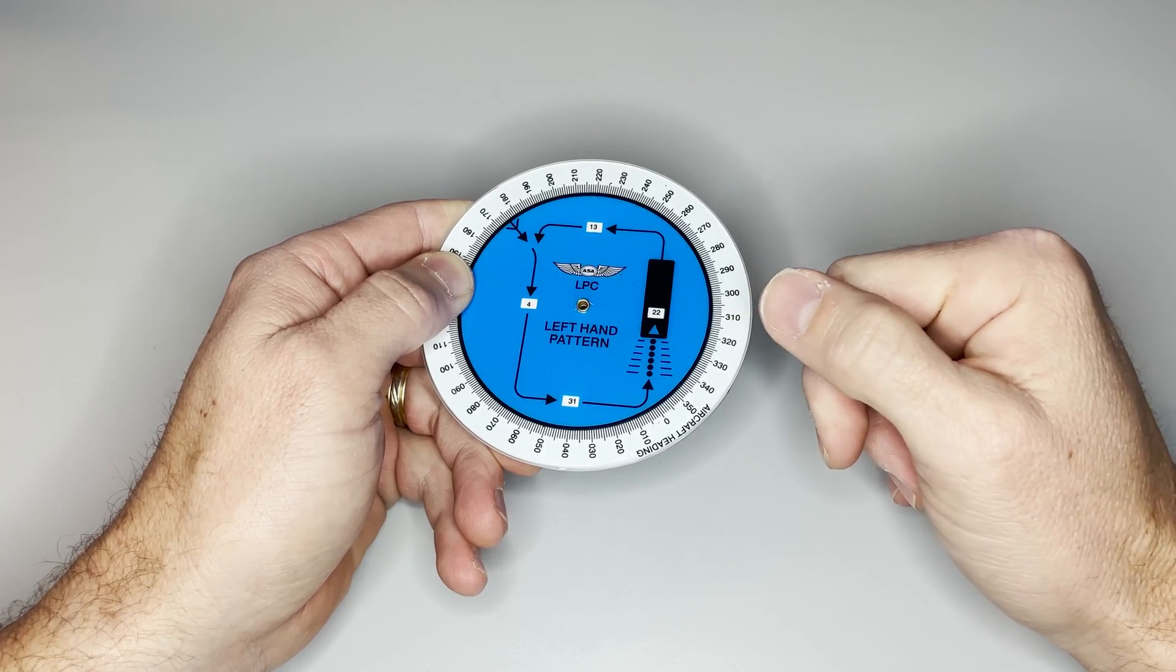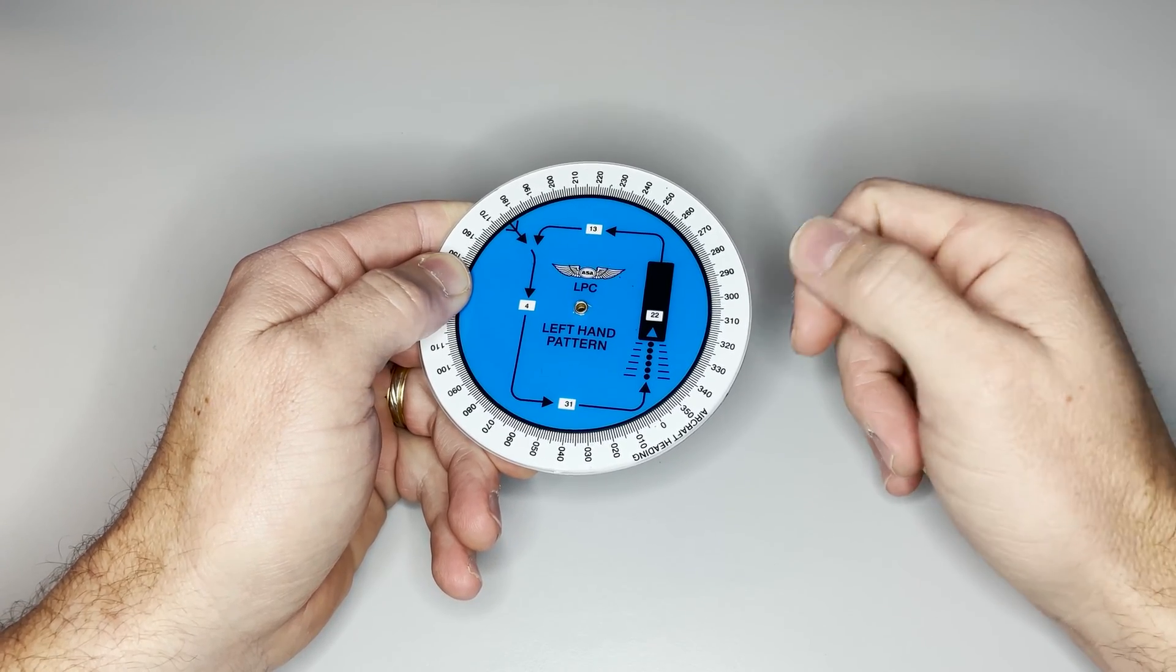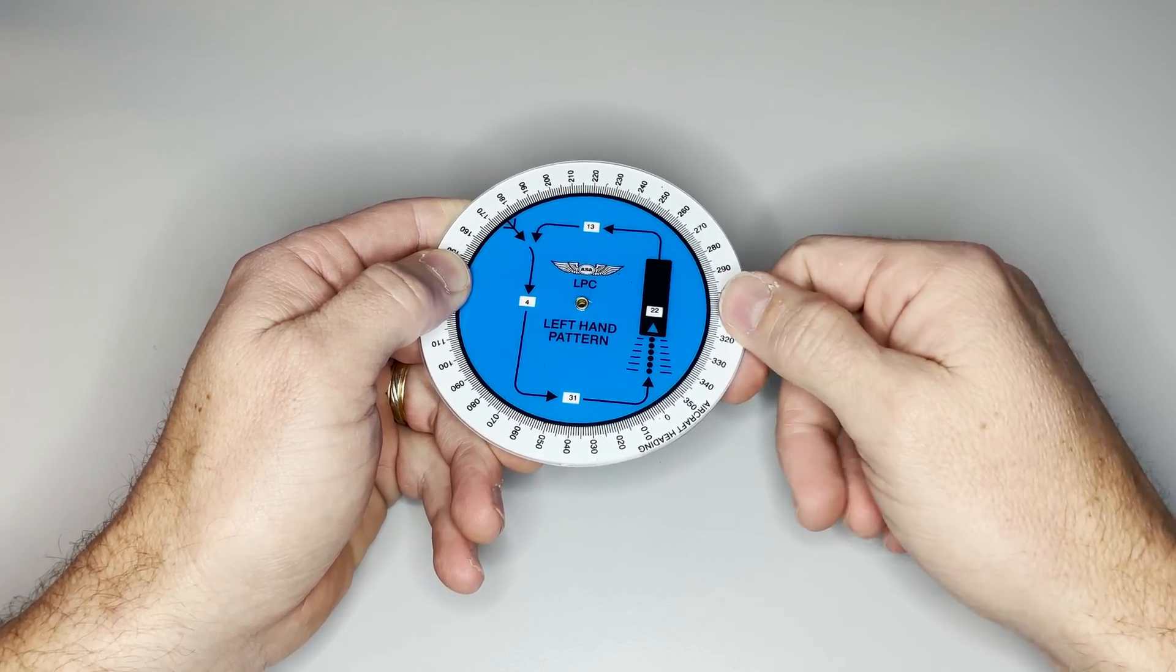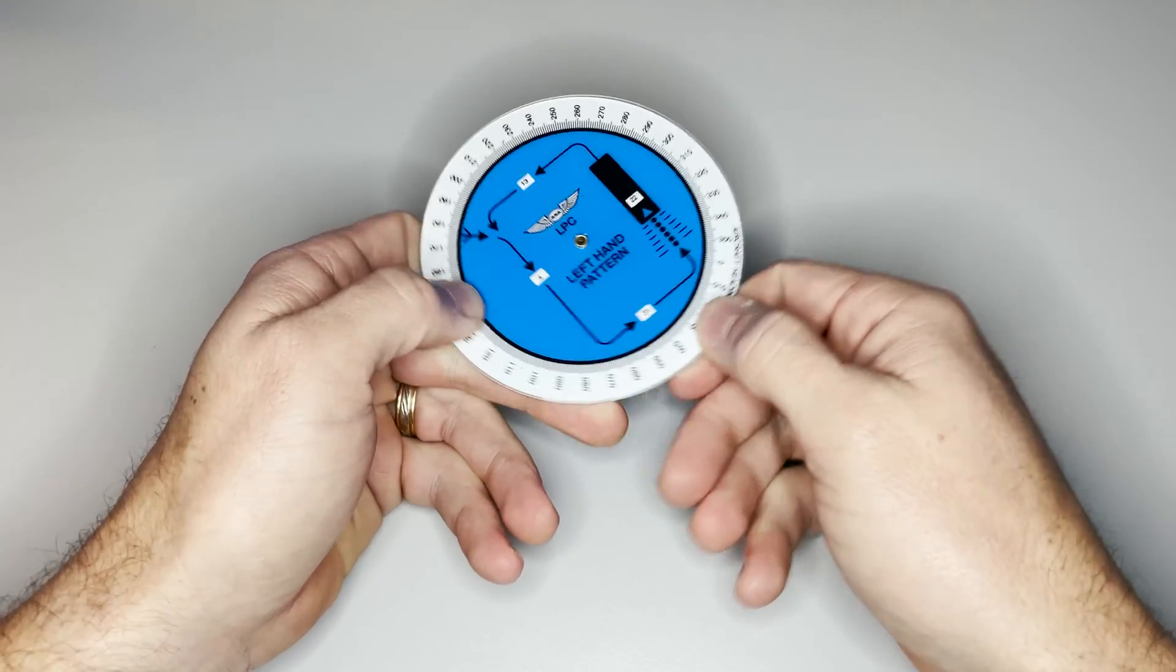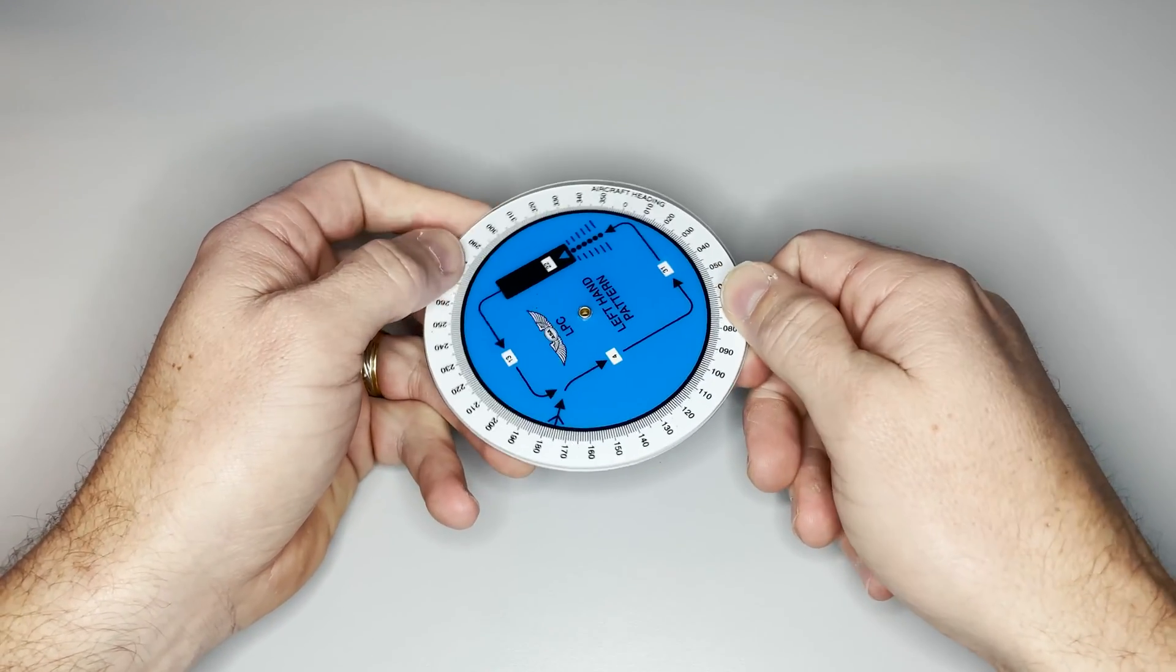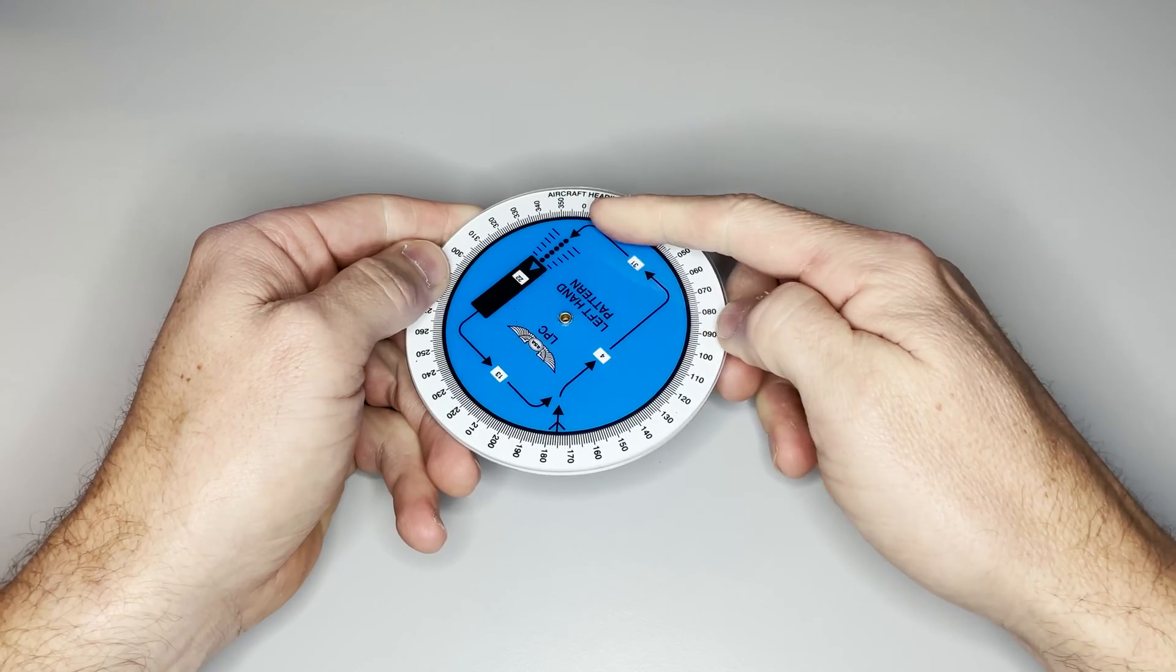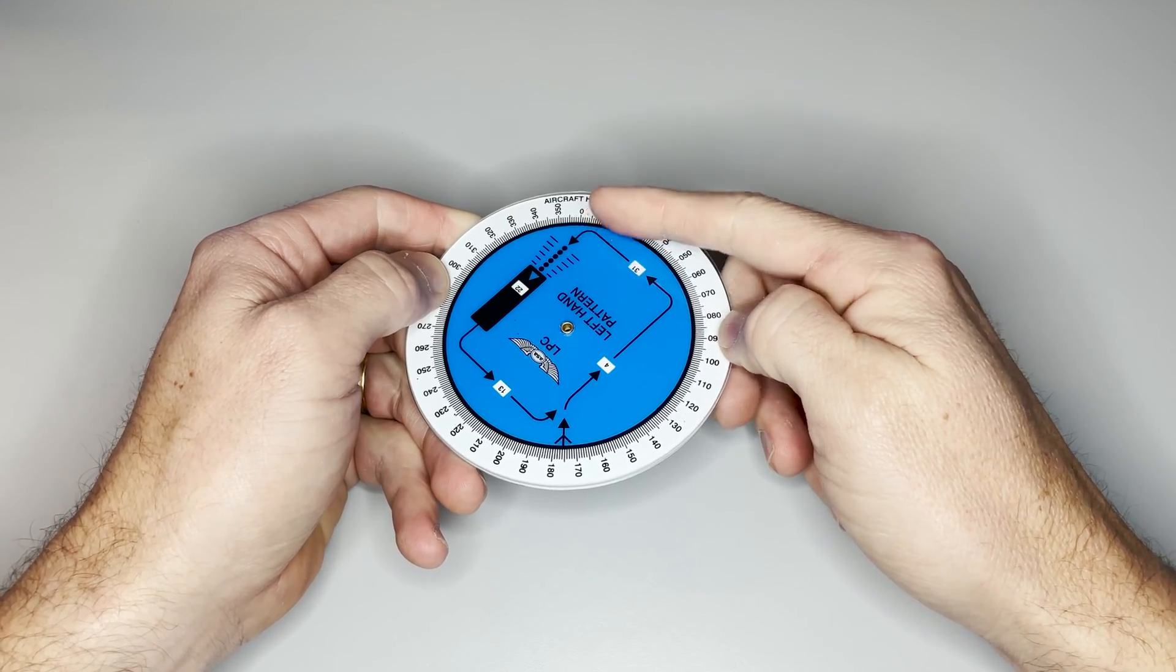The computer also can help you visualize how your entry to the airport is going to be. In this example I'm going to say we're heading due north towards the airport. So I'm going to spin the calculator around until I have north straight up.